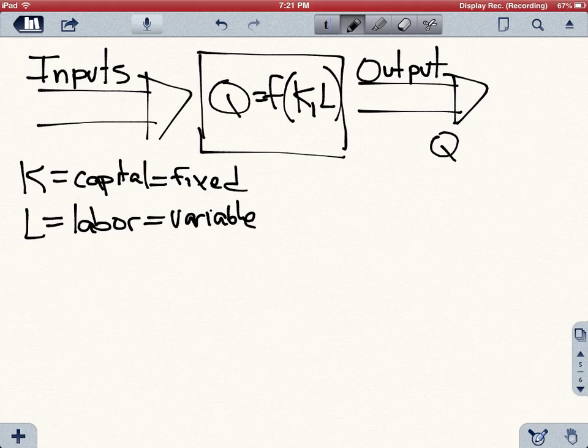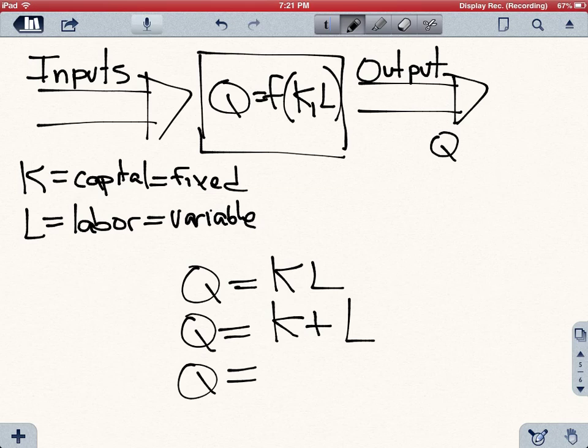And this could take many different forms. For instance, it could be in this way, or it could be in this way, or maybe it's just depending on one input, not the other. So it could take many different ways, but at the minimum...